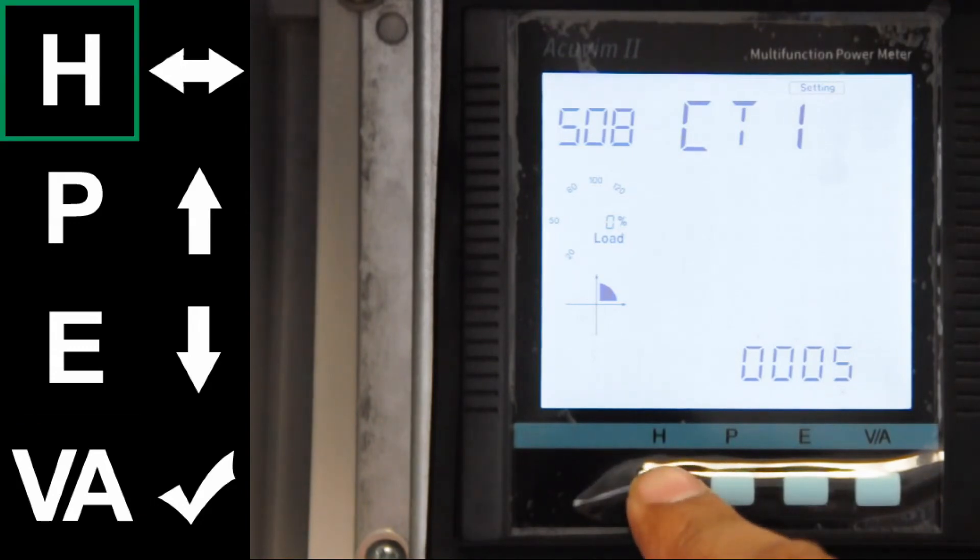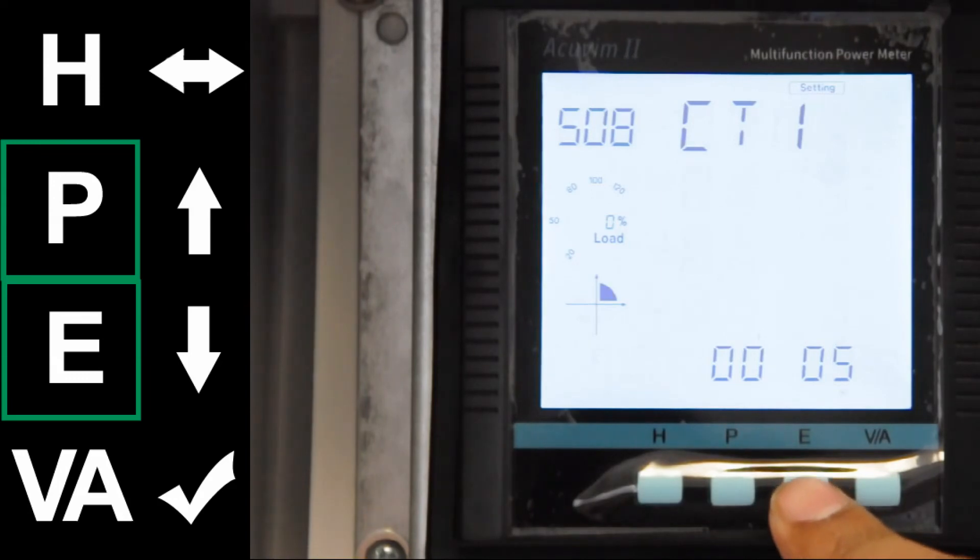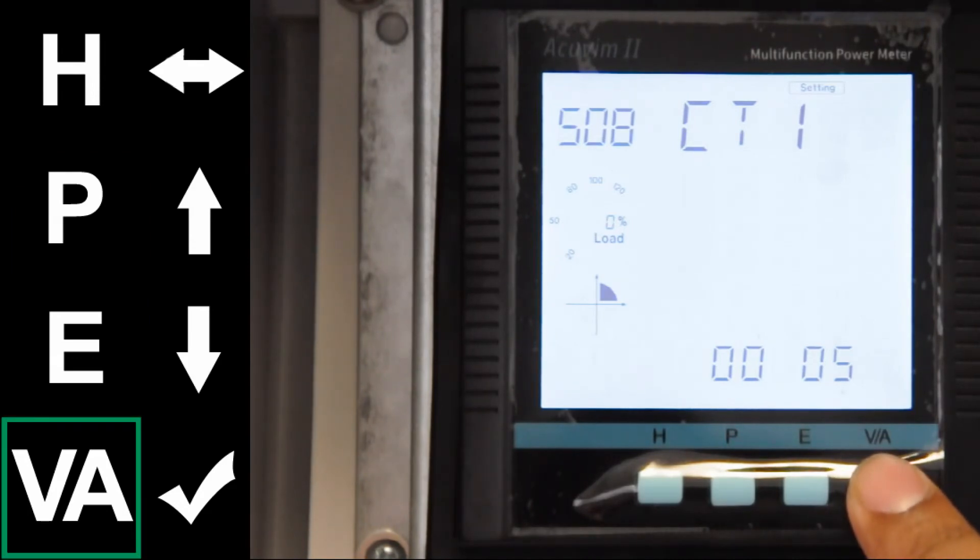Press H to move to the desired digit. Press P to increase, or press E to decrease to your desired value. When done, press VA to exit the session.